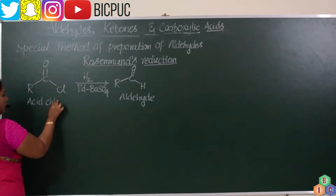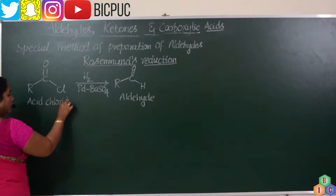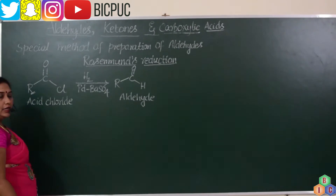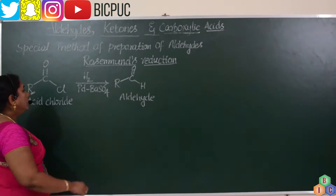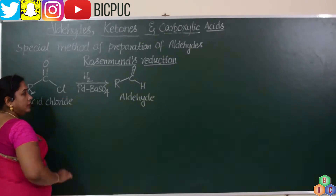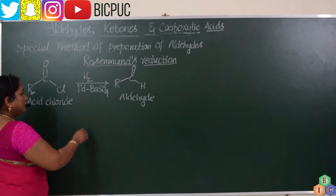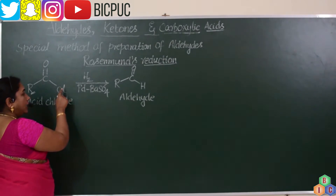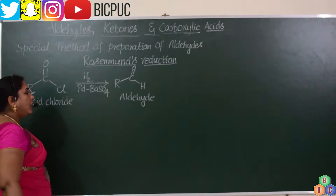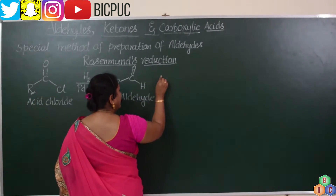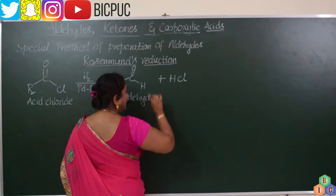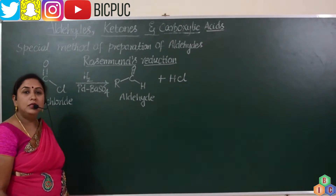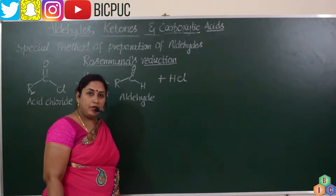Acid chloride is the general name, also called acyl chloride, by replacing R with CH3. The hydrogen being passed into the reacting mixture will replace the Cl and occupy that place, and one more hydrogen will react with the outgoing Cl, resulting in the formation of HCl. This reaction is called Rosenmund's Reduction, named after its discoverer.